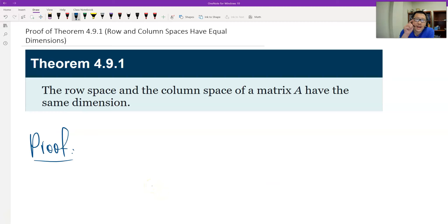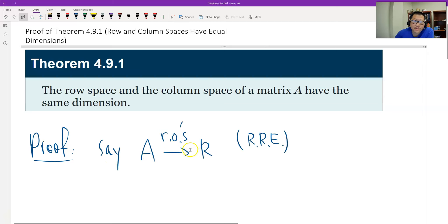First I have to introduce the reduced row echelon because the dimension is just linked to the reduced row echelon form of the matrix A. So A through row operations, we can get R reduced row echelon.